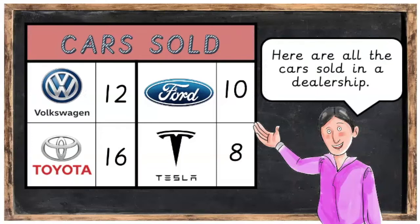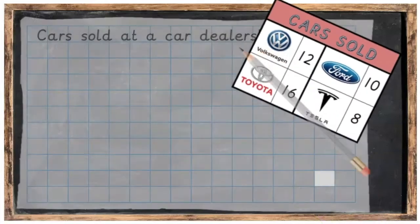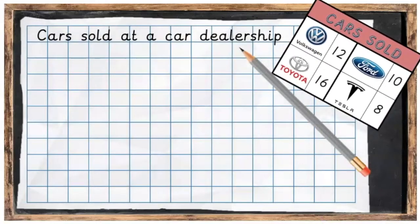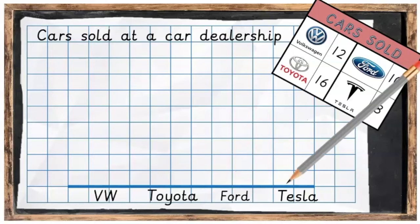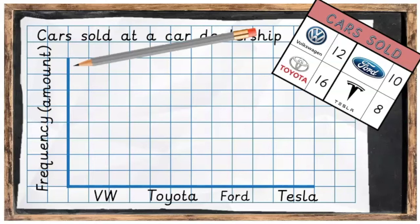Let's quickly look back at the bar chart we made in the previous lesson. We took all the cars sold in a car dealership and we put this information into a bar chart with the title 'Cars Sold at a Car Dealership.' We put the data set — the cars — down the bottom, and then we put in the names of the cars underneath it.